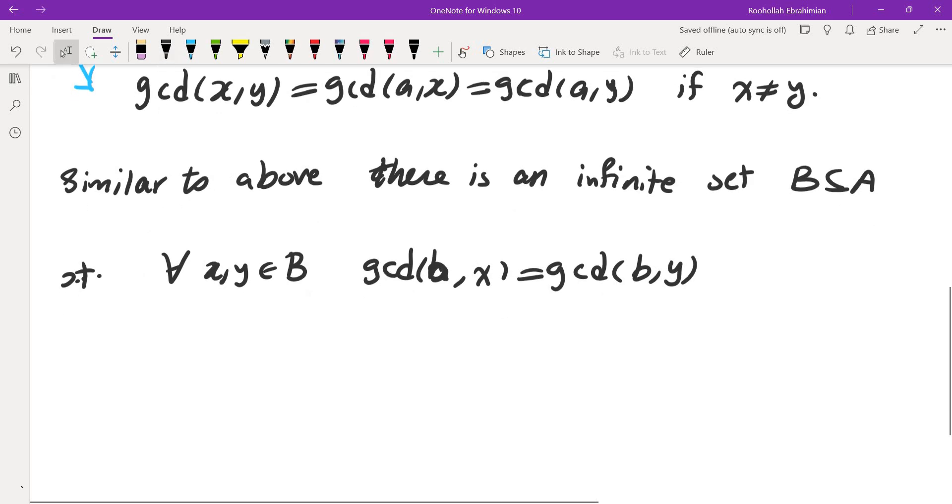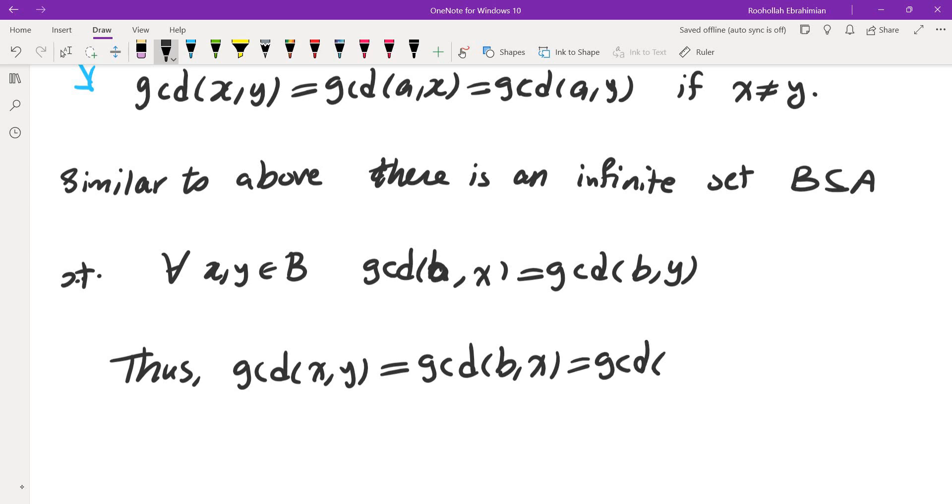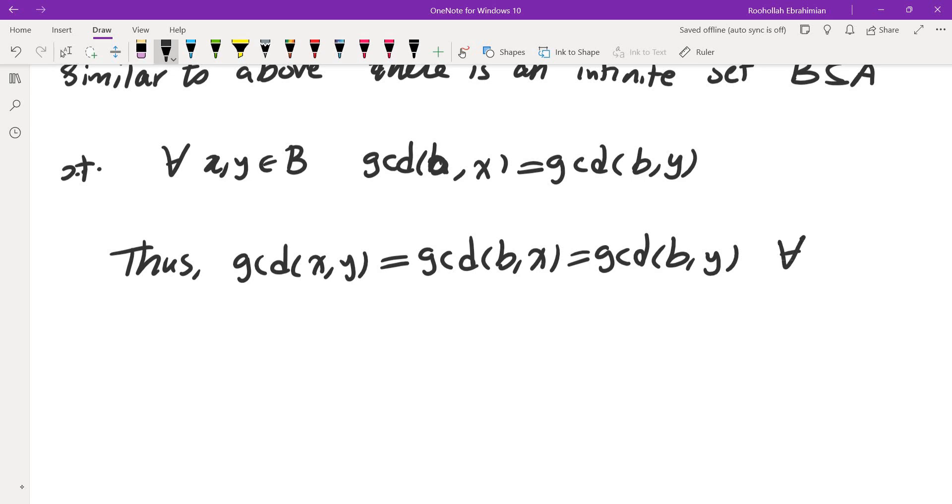So what this means again, because of the condition that we had, gcd(X,Y) must be the same thing as gcd(B,X) and gcd(B,Y). Now let's see what happened here if X and Y are distinct.